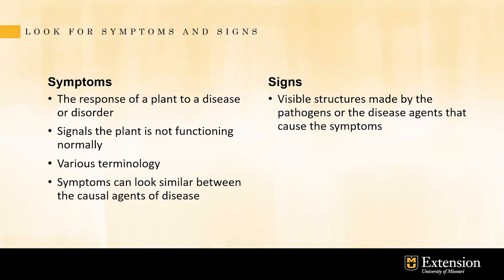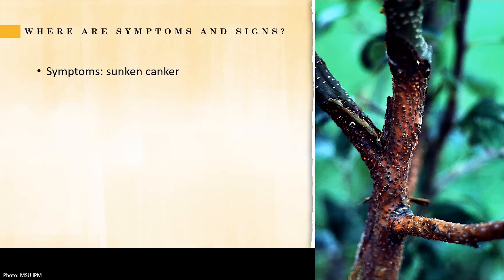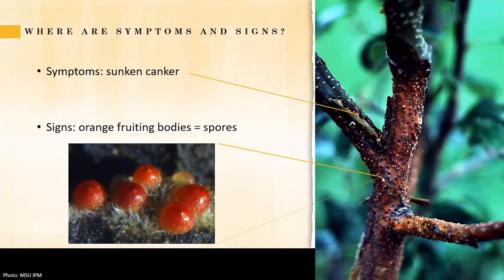I'd like to use two examples to show the difference between symptoms and signs. The first one is a sad-looking peach or apple stem. The symptoms include bark splitting open, a sunken canker, and blackening of the stem. The signs are the little orange-colored fungal fruiting bodies. Zoomed in, each one looks like a peach fruit. When weather conditions become favorable, each ball carries maybe 10,000 or millions of spores.